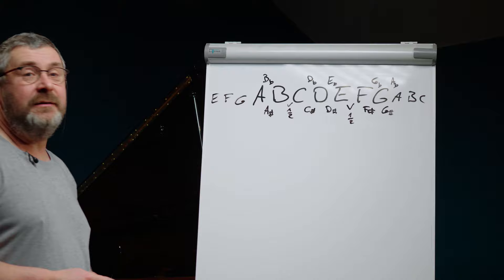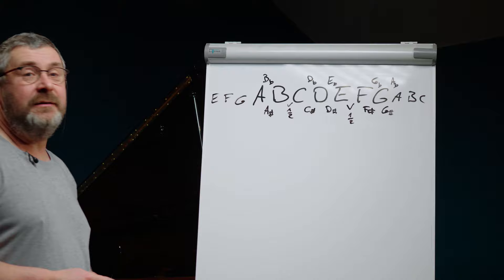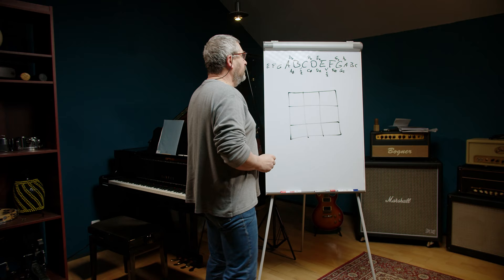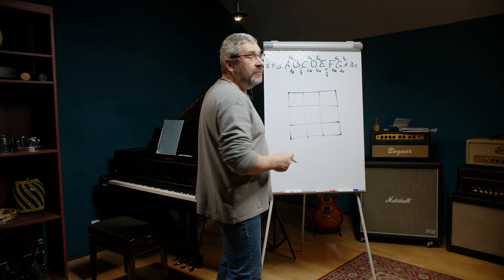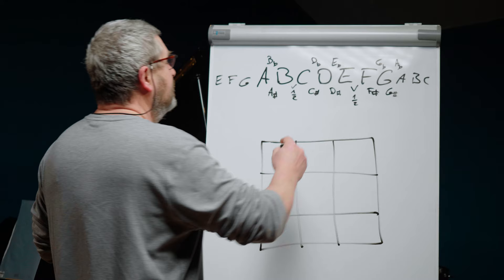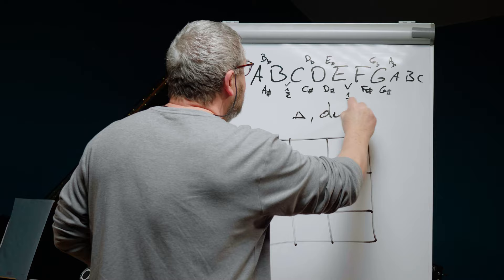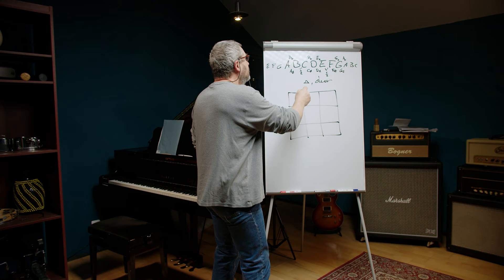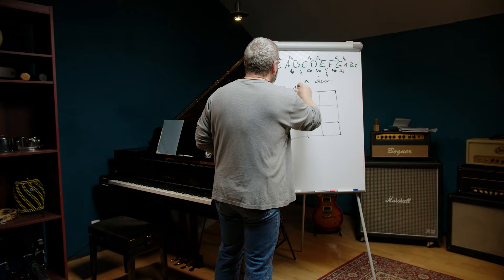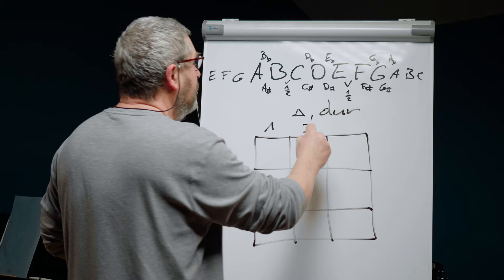Then we make the crossword puzzle grid. A chord has a minimum of three tones. Let's begin very easy. We want to practice a major chord — major, or in German, Dur. How does this chord work? It's the root — I always say one. Then we have a major third, and then a minor third, or the quint from the root.